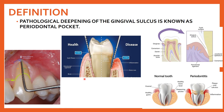Don't confuse periodontal pocket with gingival recession. It's not always compulsory that a periodontal pocket will have gingival recession, though you can find both together. In gingival recession, you can see the root. In periodontal pocket, it's not always that you can see the root — it's when you're probing that the measurement is more. This is the cemento-enamel junction, which is not visible in a normal tooth as it is covered with the gingiva, but in gingival recession you can see the root, and when probing goes inside more than 3 mm, that is a periodontal pocket.